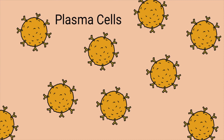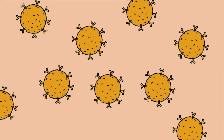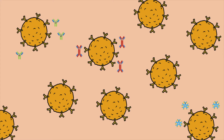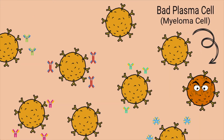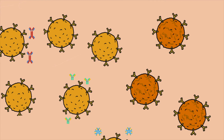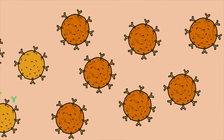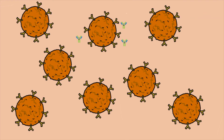Your body contains many plasma cells, and each of these plasma cells produces a different antibody. In myeloma patients, there are bad plasma cells that start to make copies of themselves. Each copy makes the same antibody, which is also called an M-spike.